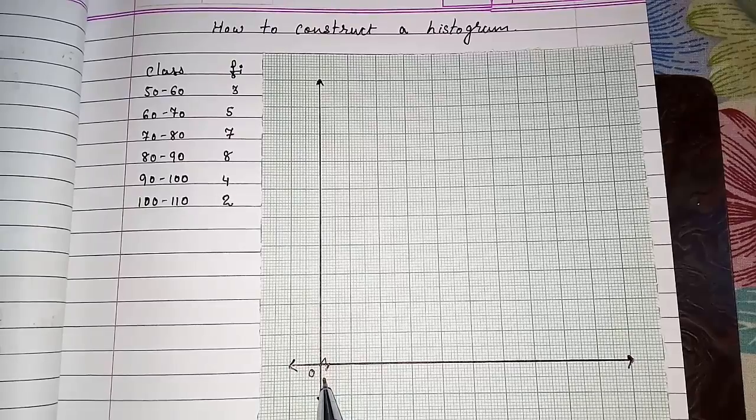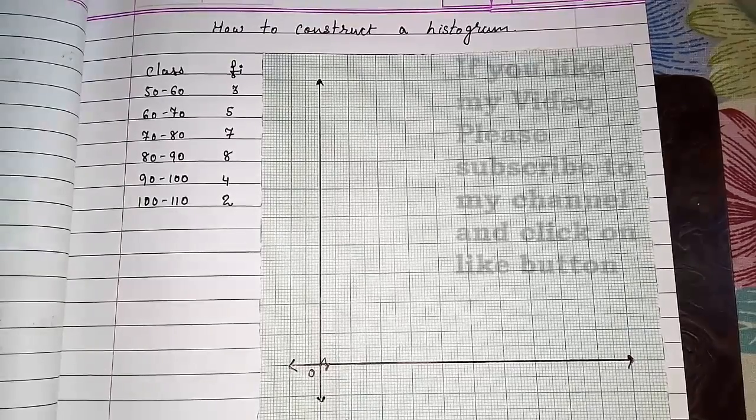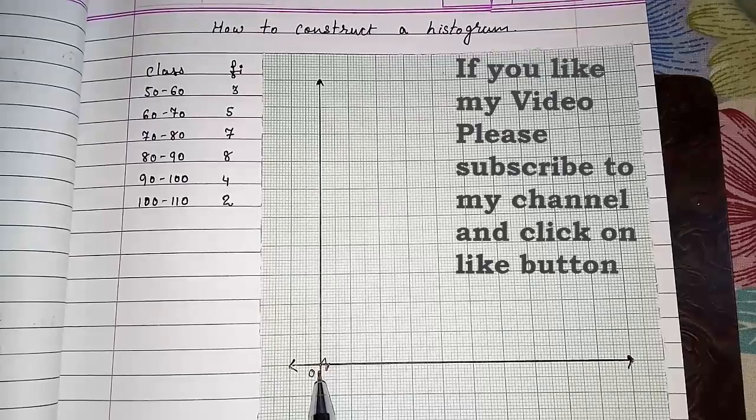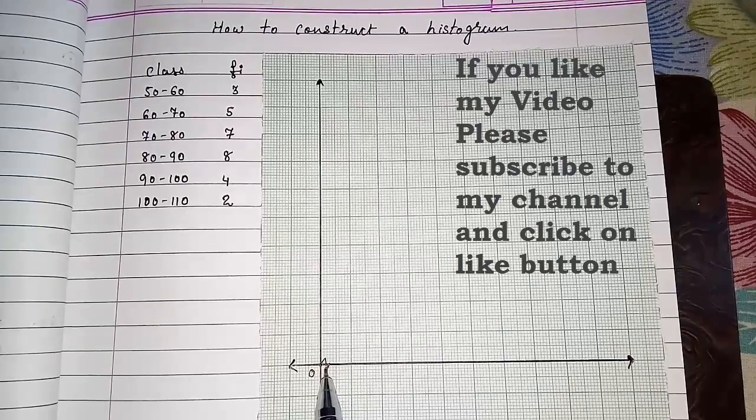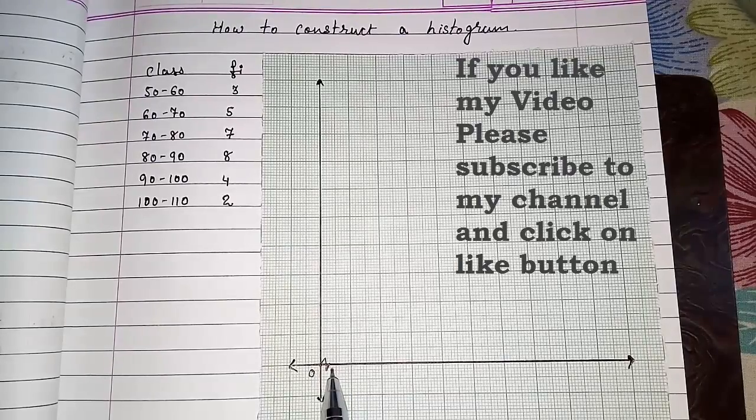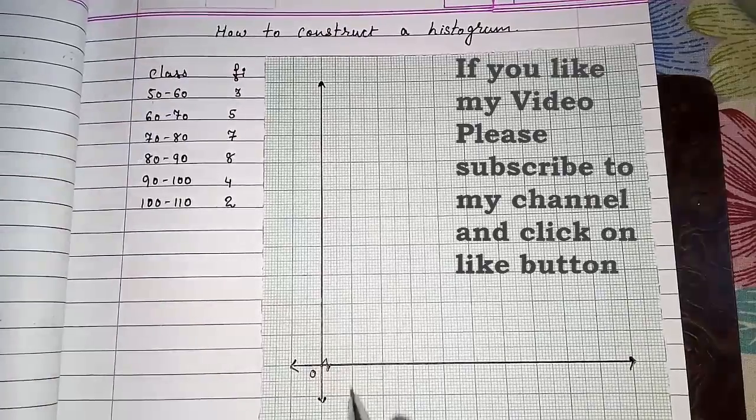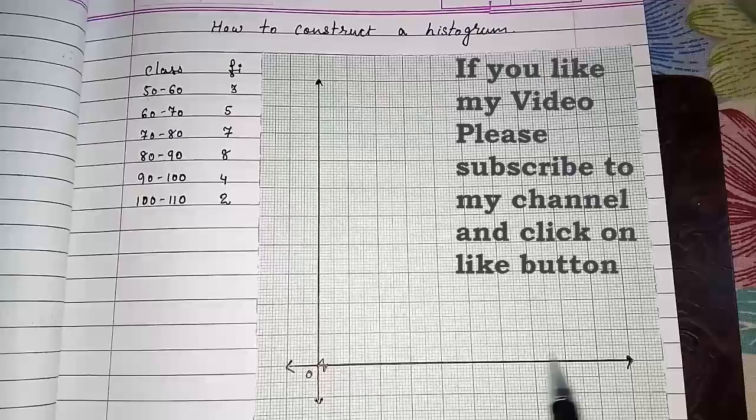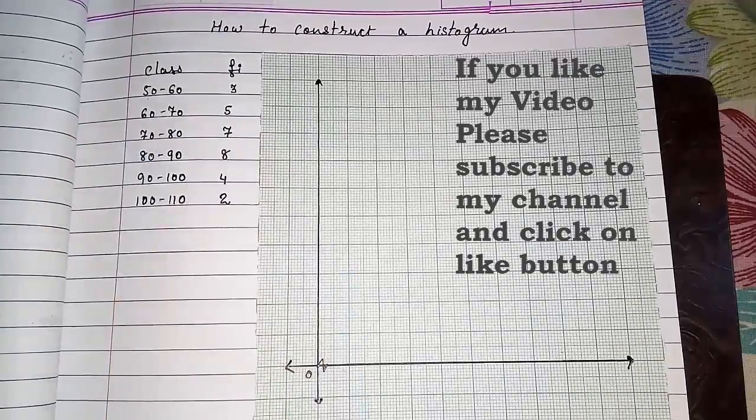It is also called zigzag. It is also called spring. So the numbers 10, 20, 30, and 40 are inside this. Now we have to start with the first interval. Always remember class on the x-axis and frequency on y-axis.